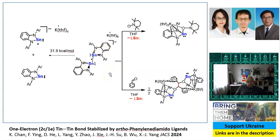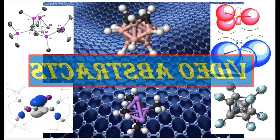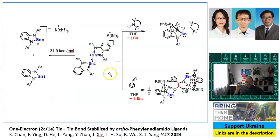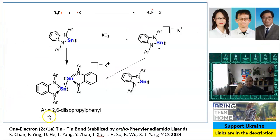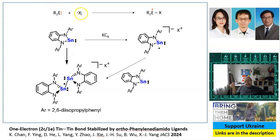Very unusual — I would try to publish it in something even bigger than JACS. One more thing that attracted my attention about this publication: this reaction belongs to the family of reactions of divalent compounds with free radicals. The expected reaction in such cases is that the electron from the free radical makes a bond by interacting with one of the electrons of the divalent compound.